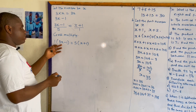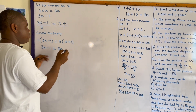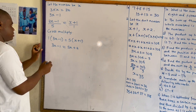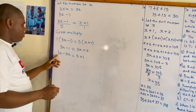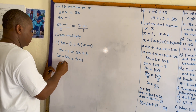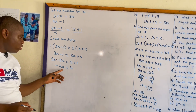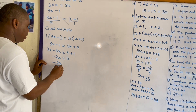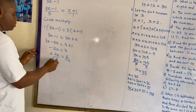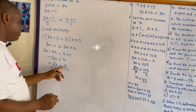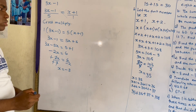Opening the brackets: 3x minus one equals 5 times x which is 5x, and 5 times one is 5. Collecting like terms: 3x minus 5x equals 5 plus 1, so negative 2x equals 6. Dividing both sides by negative two: the minus signs cancel and 2 cancels 2, leaving x equals 6 divided by negative two. Since positive divided by negative is negative, and 6 divided by 2 is 3, x equals negative three.